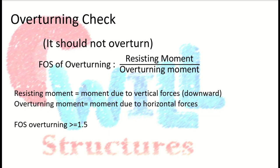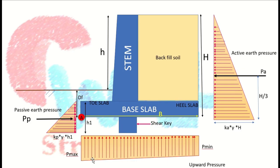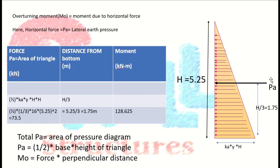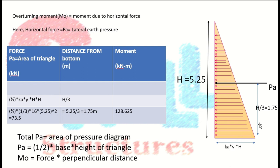The formula for factor of safety against overturning is resisting moment divided by overturning moment, where the resisting moment is due to vertical forces and the overturning moment is due to horizontal forces. The active earth pressure is the horizontal pressure acting on the retaining wall. Pa is calculated as the area of the triangular pressure diagram, which is one-half times base times height. The area of the triangle is half Ka × γ × H, where H = 5.25 meters.